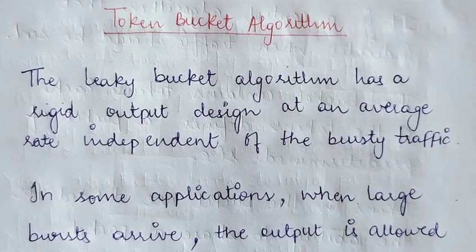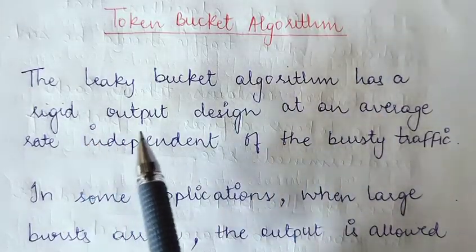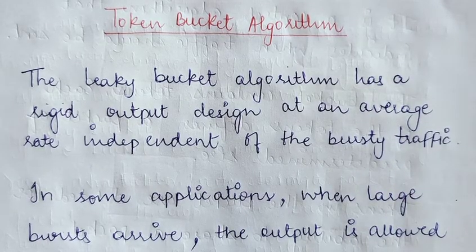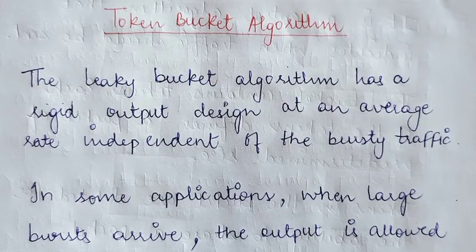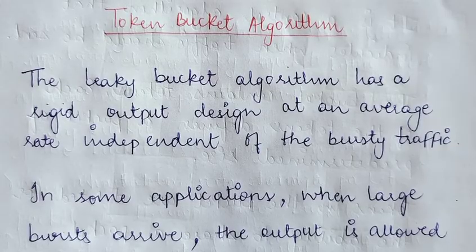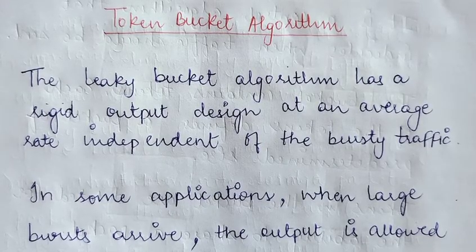Hi everyone, today we are going to study the token bucket algorithm. This is yet another congestion control algorithm, just like the leaky bucket algorithm. The leaky bucket algorithm has a rigid output design at an average rate, independent of bursty traffic. No matter how bursty the traffic is, the output of the leaky bucket algorithm is at a constant rate, irrespective of the inflow rate. So basically, the leaky bucket algorithm does not consider bursty traffic.